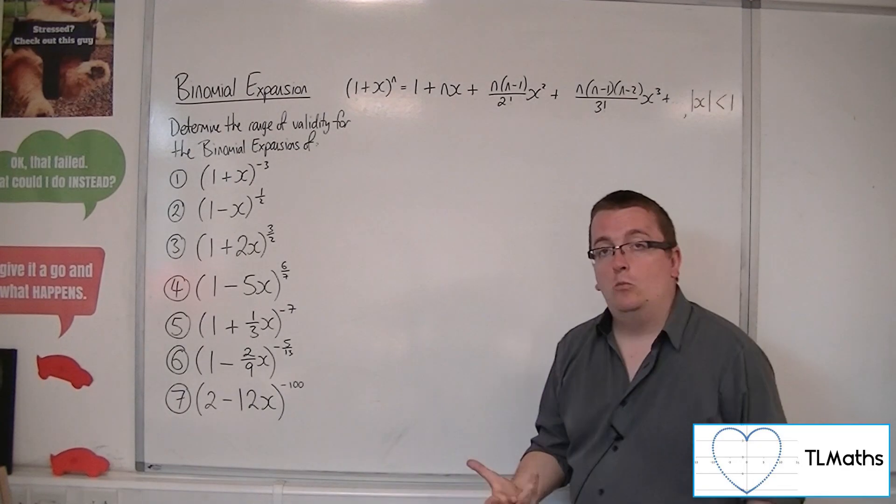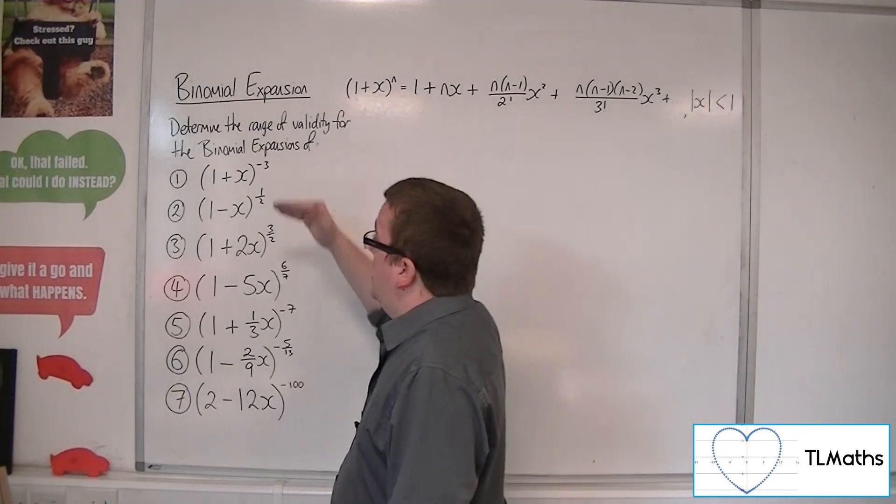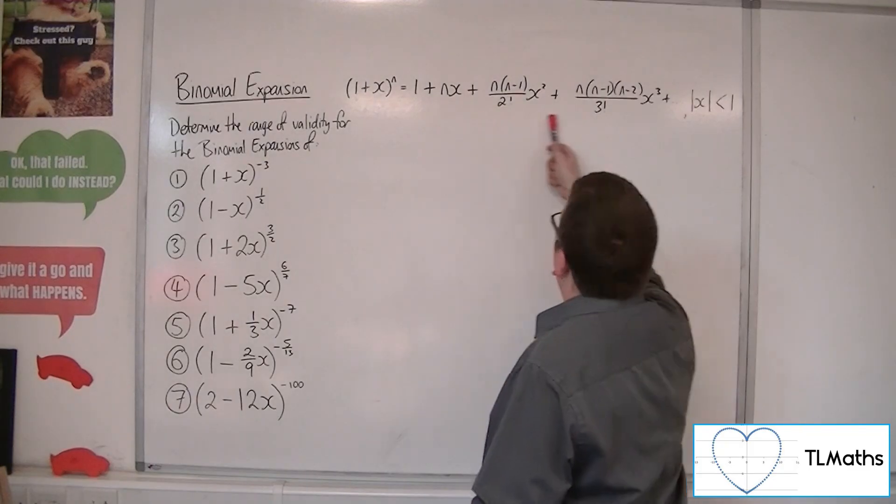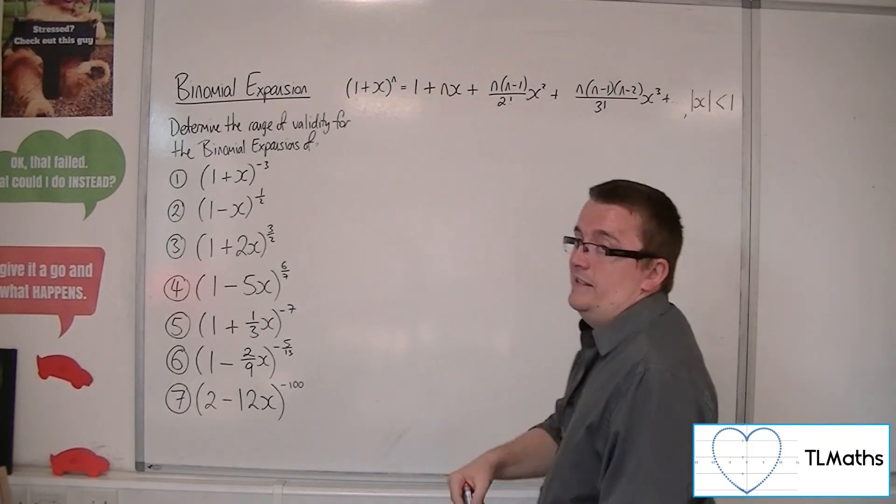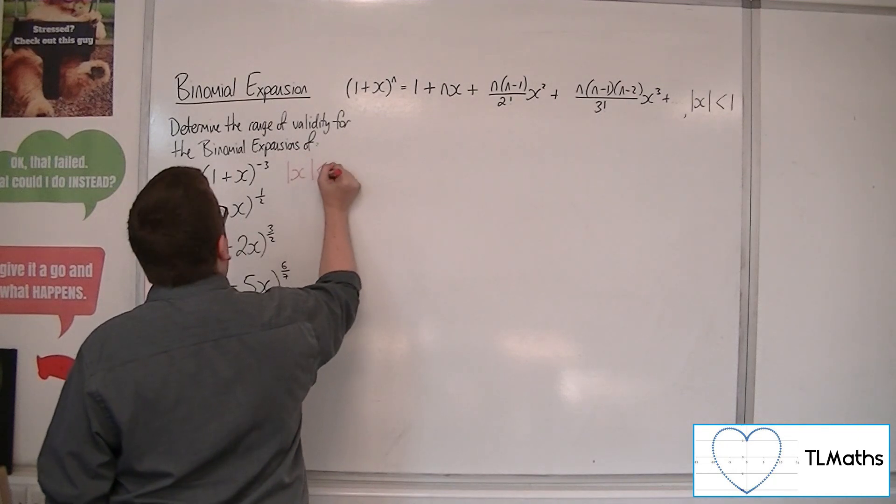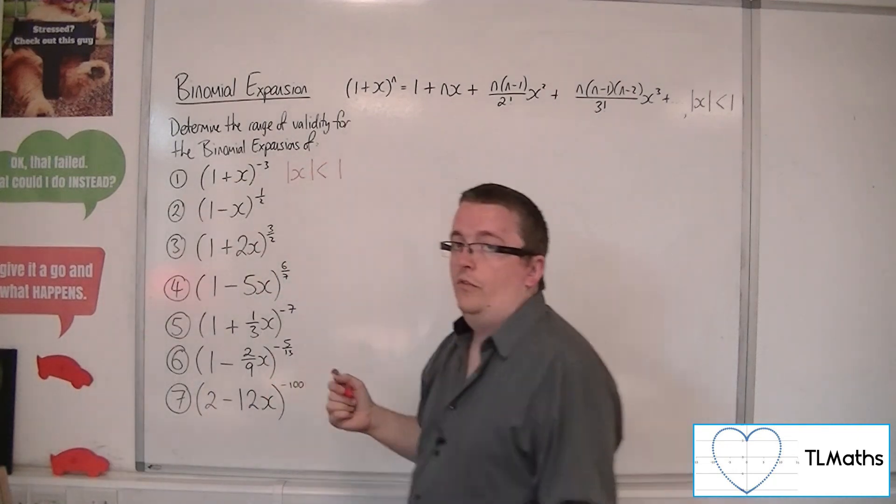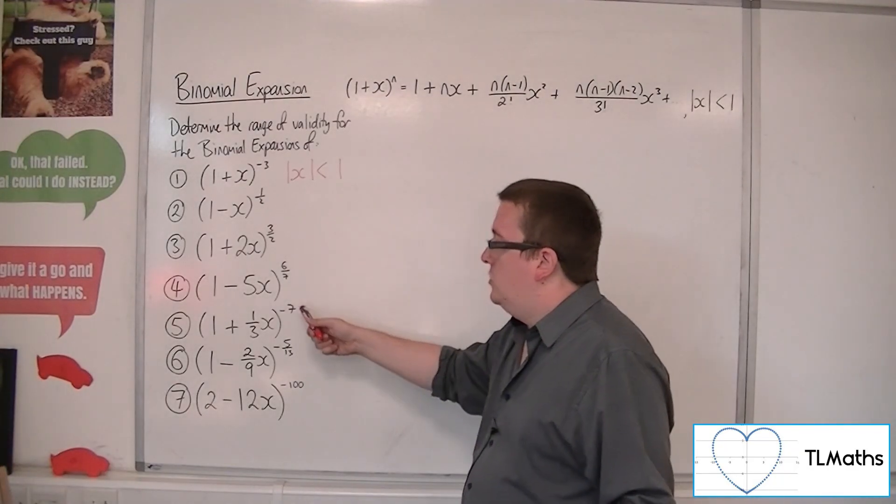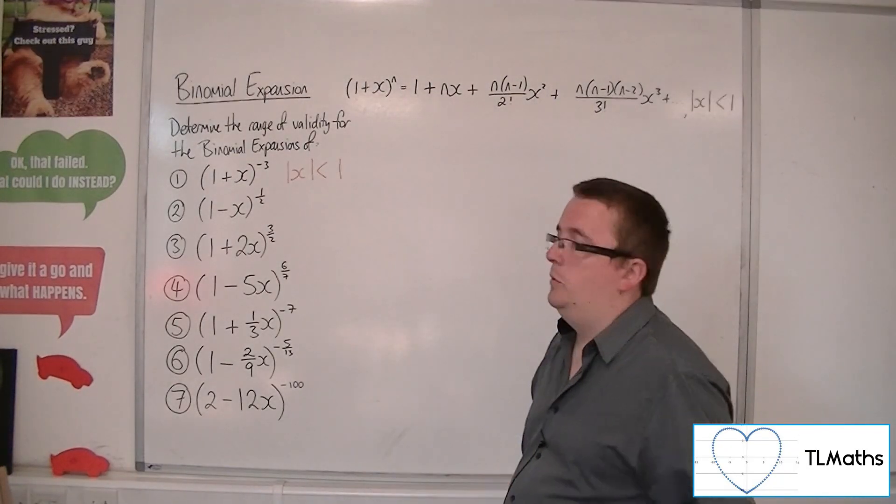So it works in precisely the same way. If we look at number 1, (1+x)^(-3), then the range of validity is just |x| < 1. Now, that -3 has no bearing on the range of validity. In none of these cases does that power have any influence on it whatsoever.